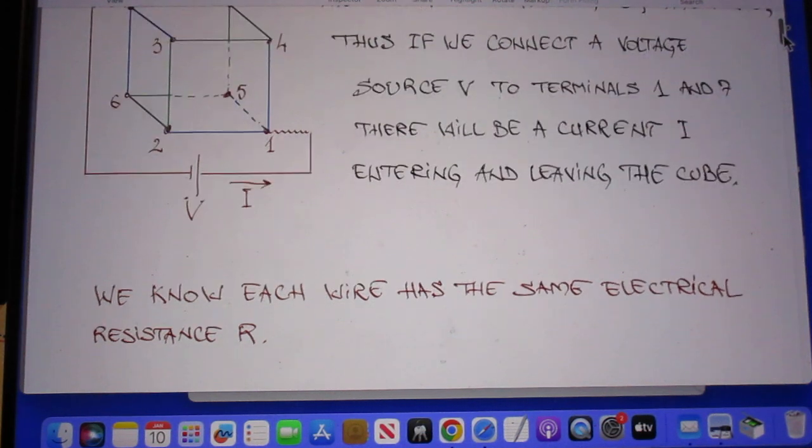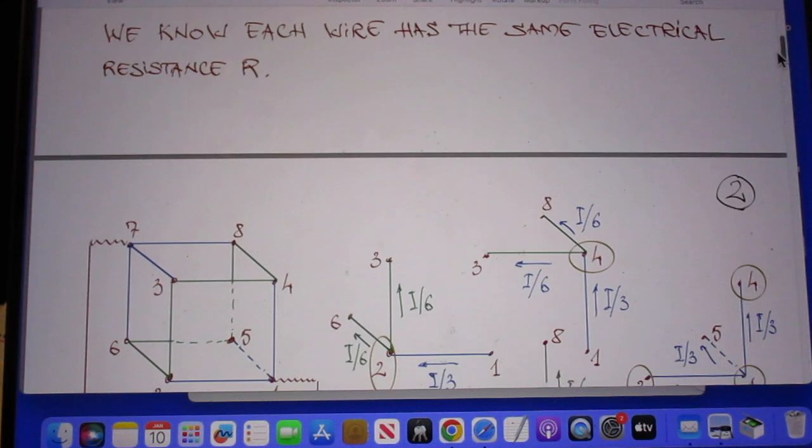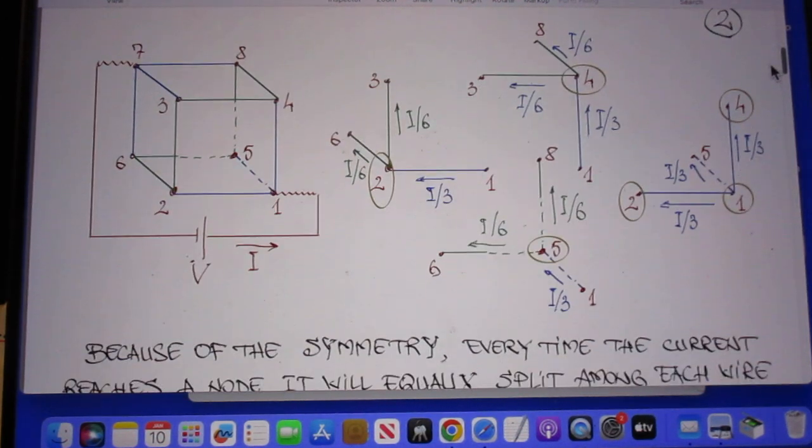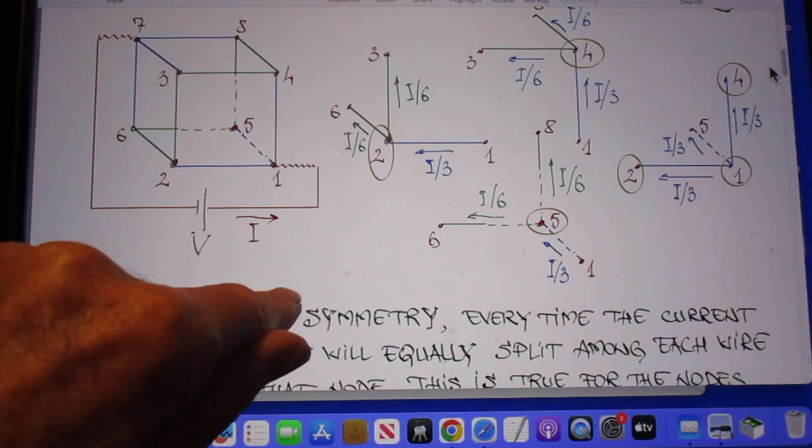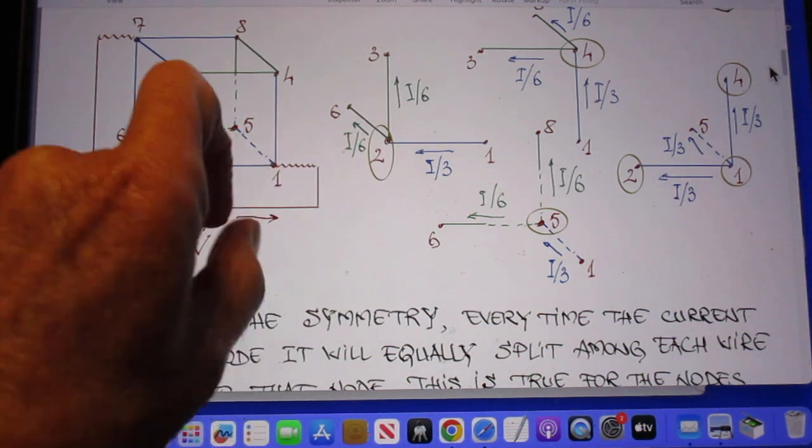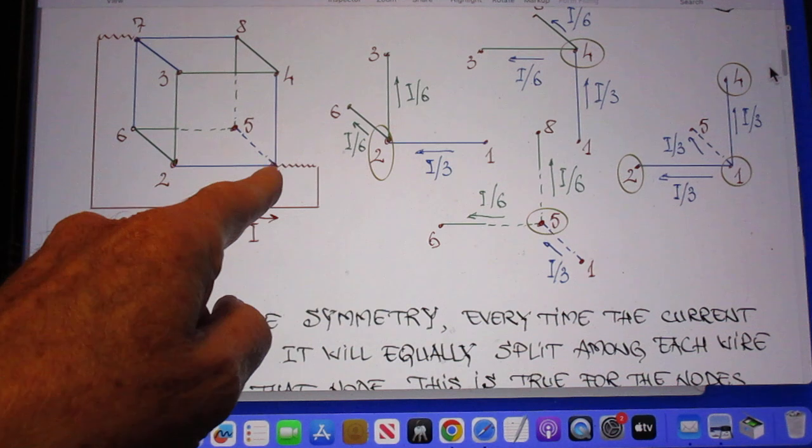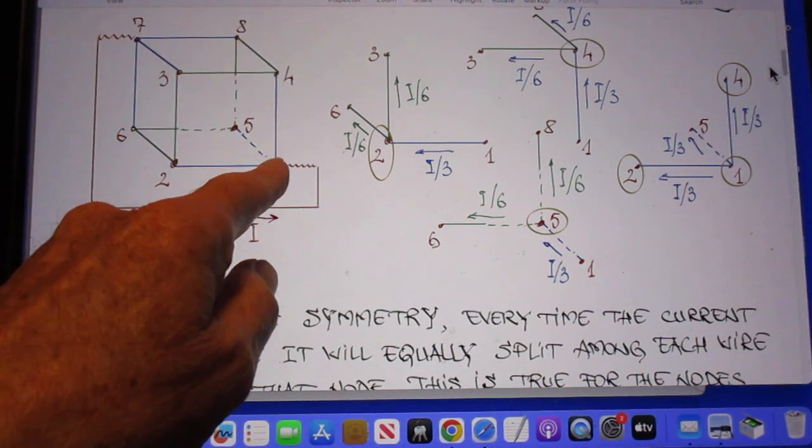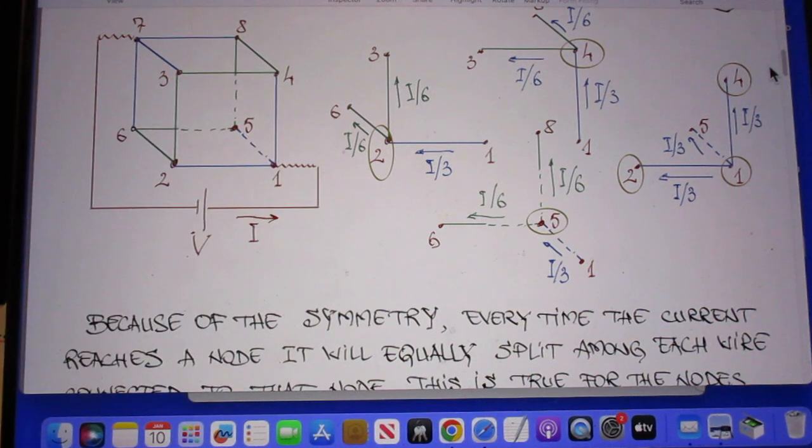So now comes Oregon's solution. Read with me. So if you look here at point 1, let's say the current comes in at 1, then of course one-third of that must go in this direction, one-third in this direction, and one-third in this direction because of the symmetry. And you see that here.